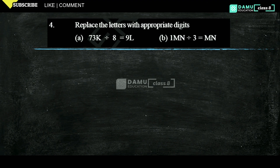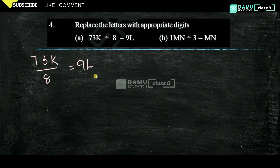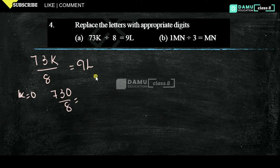Our fourth question: replace the letters with appropriate digits. First one: 73K divided by 8 equals 9L. 9L is an integer. Let K equal 1: 730 by 8 gives 91.25 — not an integer. So K equals 2, then K equals 5: 735 by 8 gives 91.875 — still decimal.